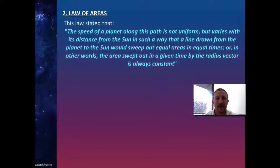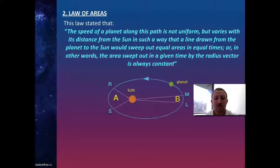His second law is the law of area. It states the speed of a planet along this path is not uniform but varies with its distance from the sun in such a way that a line drawn from the planet to the sun would sweep out equal areas in equal times. In other words, the area swept out in a given time by the radius vector is always constant.